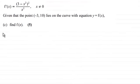Now we're given that the first differential of f of x, f'(x), equals (3 - x²)² divided by x², where x does not equal 0. We're given that the point (-3, 10) lies on the curve with equation y = f(x). For this part of the question, we've got to find f(x).